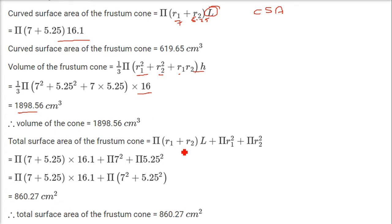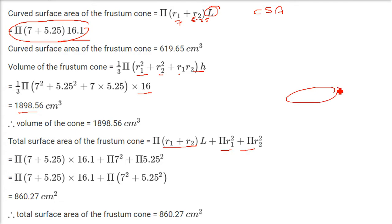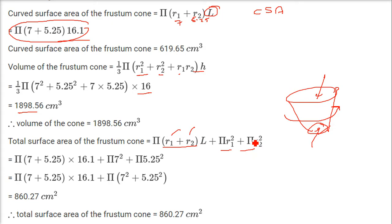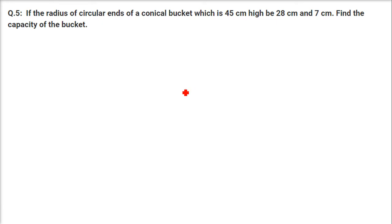For total surface area, add π·r1² + π·r2² to the curved surface area. With r1 = 7 and r2 = 5.25, the total surface area comes out as 860.27 cm².